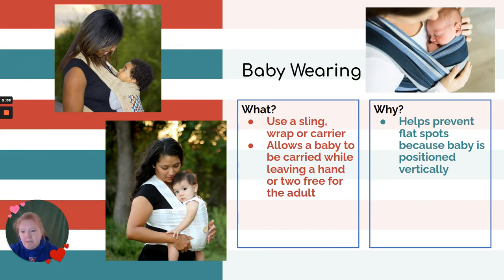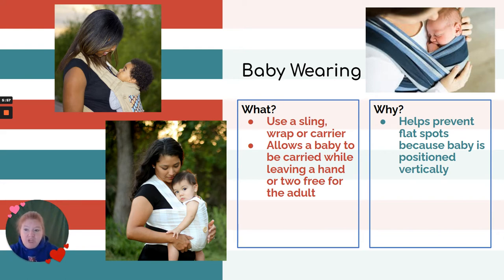Baby wearing: use a sling, a wrap, a carrier. It allows the baby to be carried while also leaving a hand or two free for the adult, depending on which type you use. I would put my kid in a backpack and cook — I had both hands free but was still wearing my child. Besides encouraging closeness, it helps prevent flat spots because the baby is positioned vertically instead of constantly lying down.